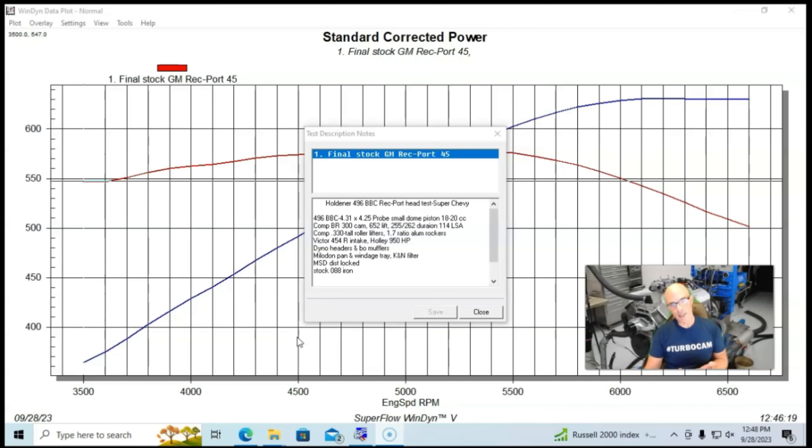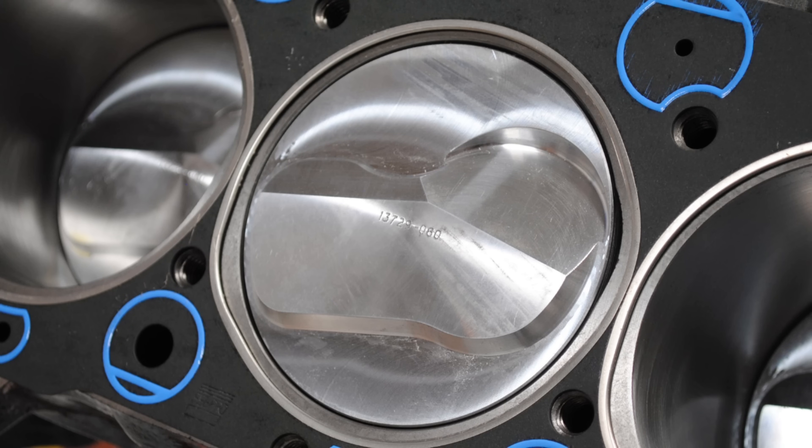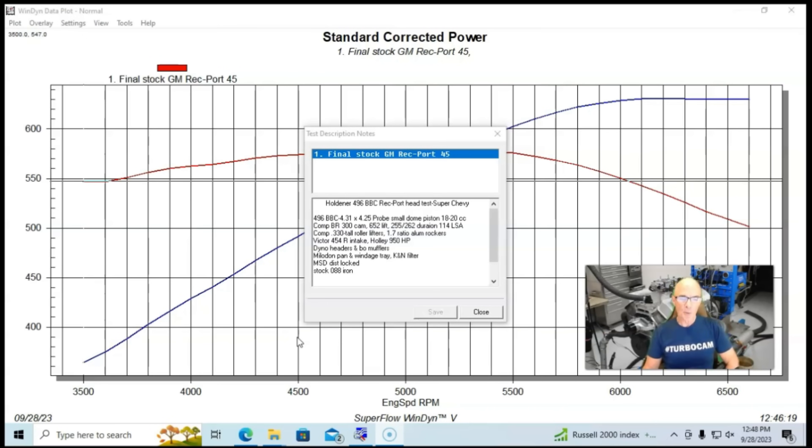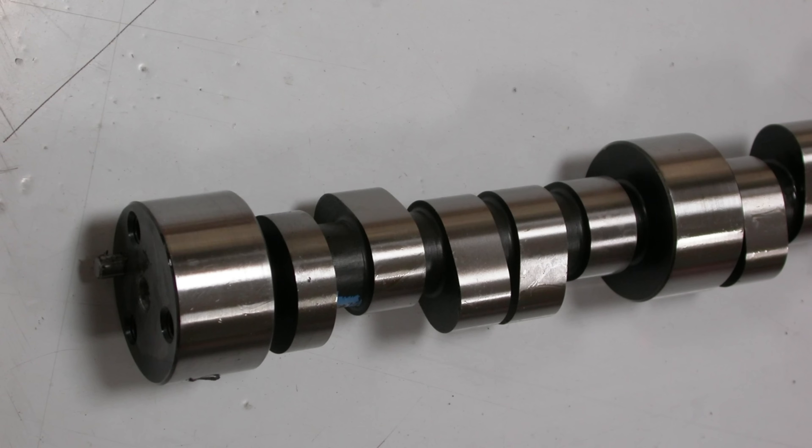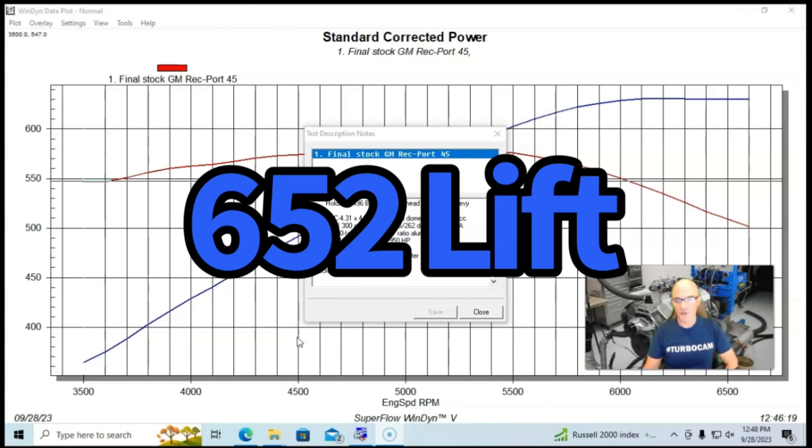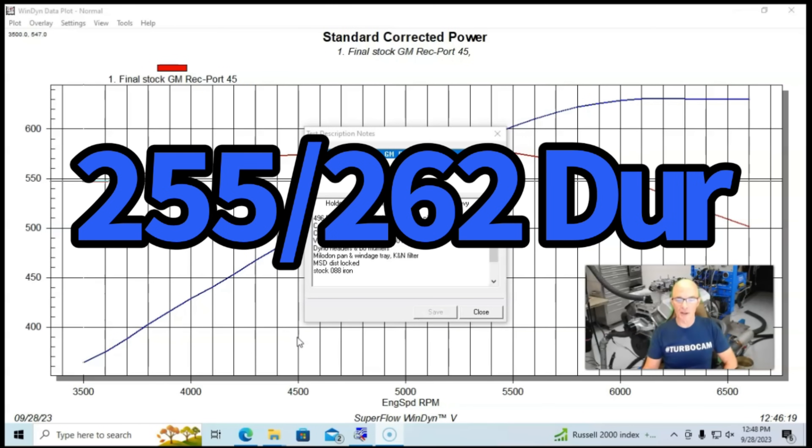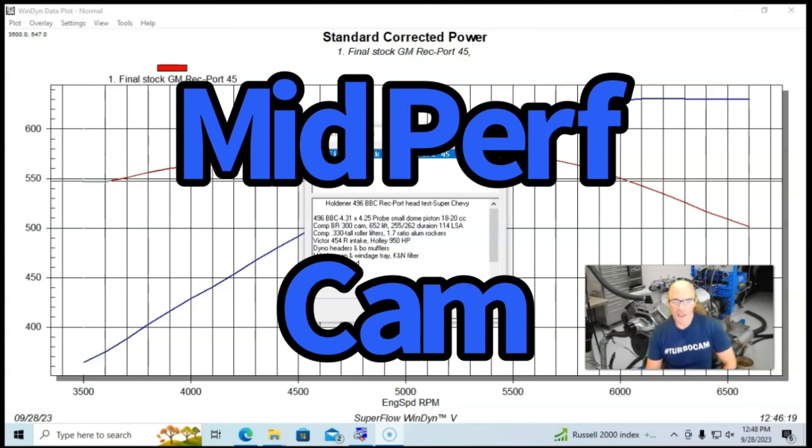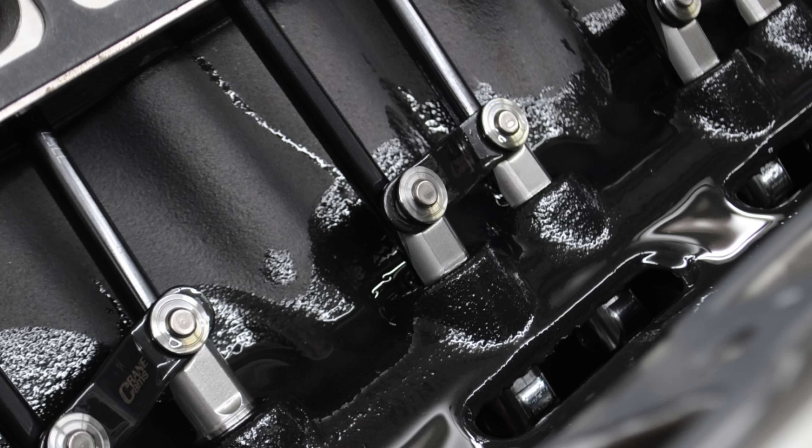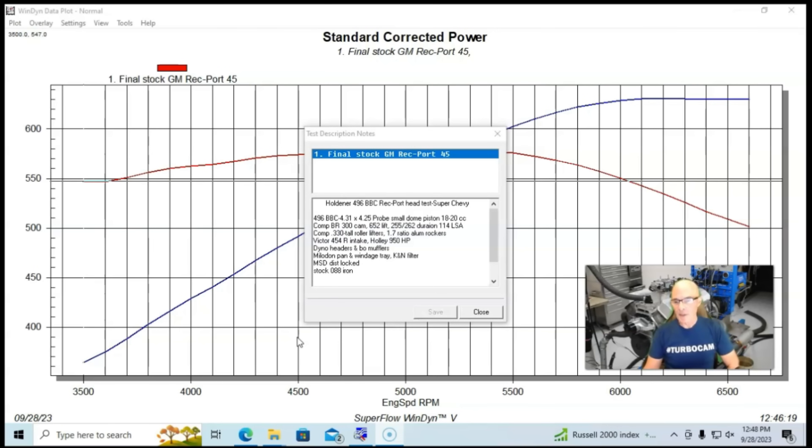Let's take a look at our combination. We have a small dome piston that I normally run, 18 to 22 cc's. We have the often chosen solid roller camshaft, a Comp BR-300. It's a .652 lift, 255, 262 degree duration, and 114 degree lobe separation angle. The reason that cam is in there, it's sort of middle of the road for cams. It is a solid roller, but it's a fairly mild profile.